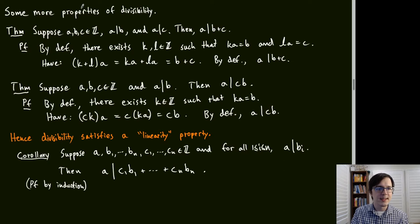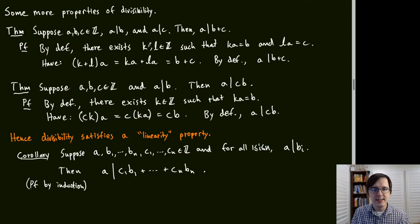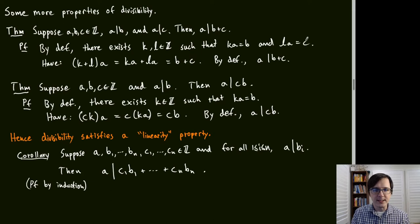First theorem: if A divides B and A divides C, then A divides B + C. By definition, there exist integers K and L with KA = B and LA = C. Then (K + L)A = KA + LA = B + C by distributivity, so A | B + C.